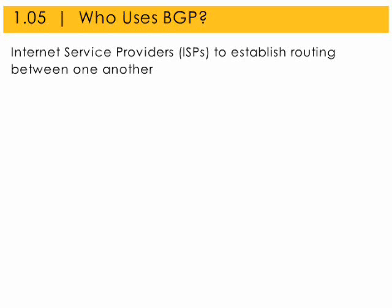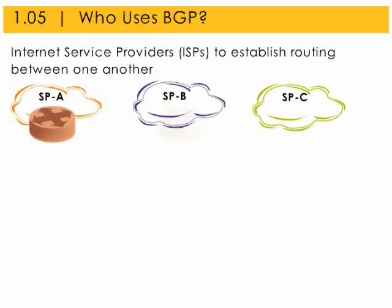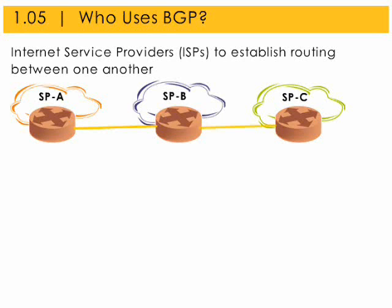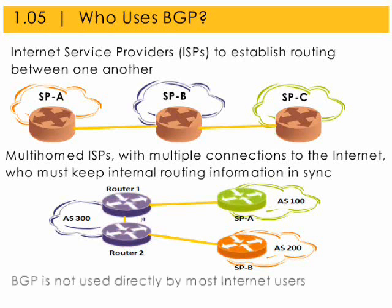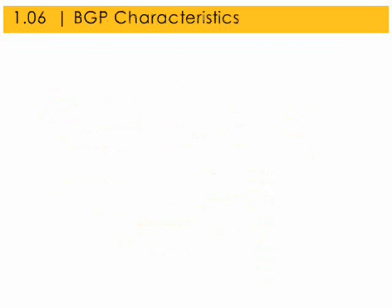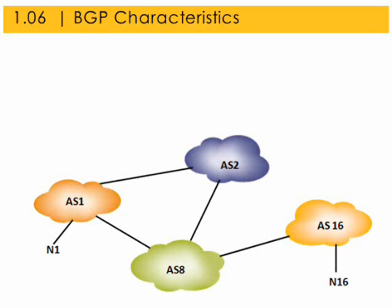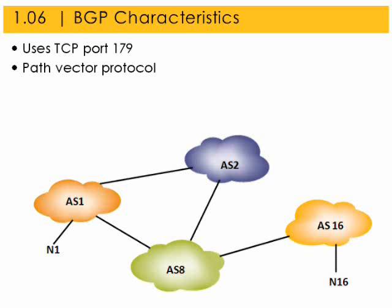BGP does not use traditional interior gateway protocol metrics, but rather makes routing decisions based on path, network policies, and rule sets — it is less complex and thus less compute and memory intensive than link state protocols. BGP is predominantly used by Internet Service Providers to exchange network routing information, especially when they are multi-homed.